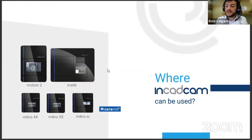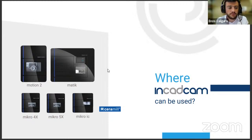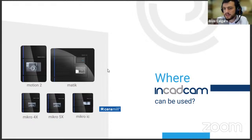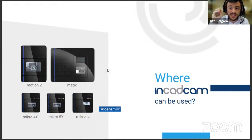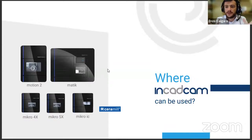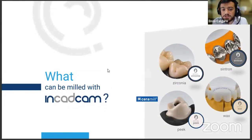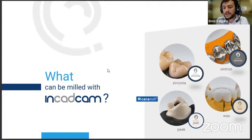InCADCAM can be used on any AG mill — Motion 2, Medic, Micro 4X, Micro 5, Motion 3, Motion 2 Dry. The requirements are Ceramil Match 2 and the protection plan from Amon Gearbox Balance. InCADCAM is activated on the dongle, so even if you have 10 Medics on one dongle, you only need one activation. Compatible materials include Sintron, zirconia, PEEK, wax, and PMMA.